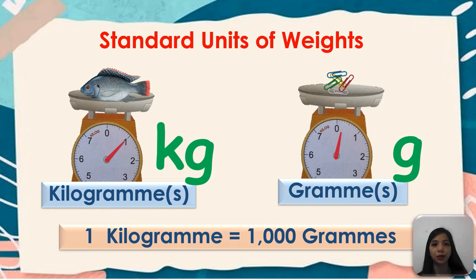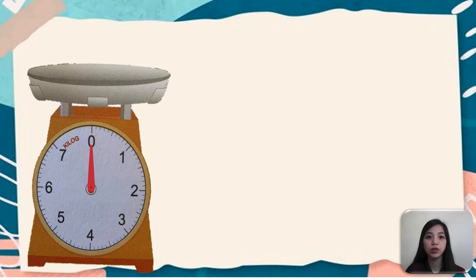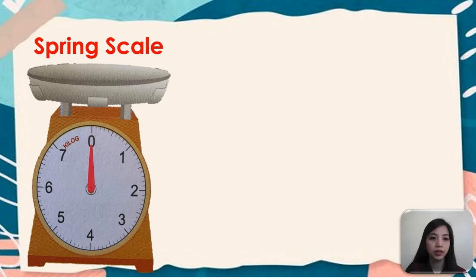For us to get the exact measure of weight, we need to use a measuring tool. So we can call it spring scale. A spring scale consists of different parts.